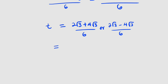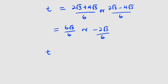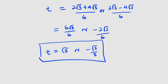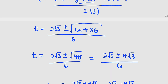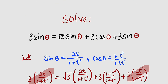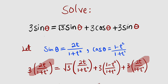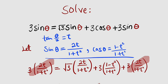Taking the two cases: 2 root 3 plus 4 root 3 divided by 6 gives 6 root 3 over 6, which equals root 3. Or 2 root 3 minus 4 root 3 divided by 6 gives negative 2 root 3 over 6, which equals negative root 3 divided by 3. Remember that t is nothing but tangent of theta divided by 2, as derived in our previous lesson.